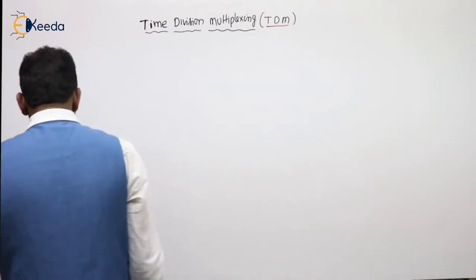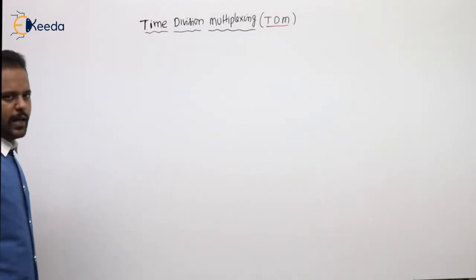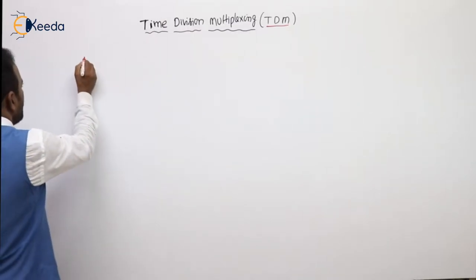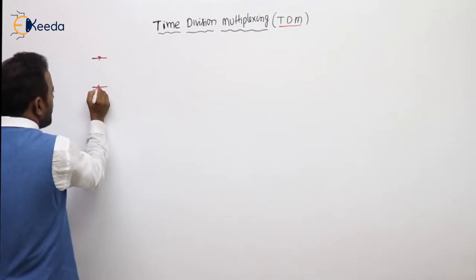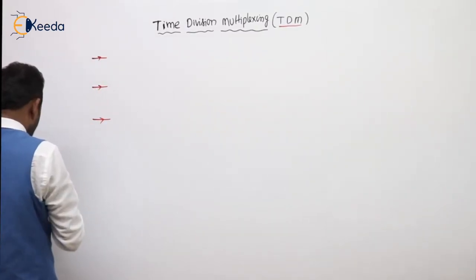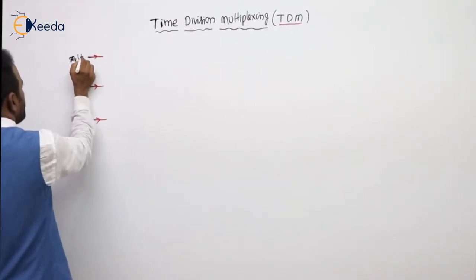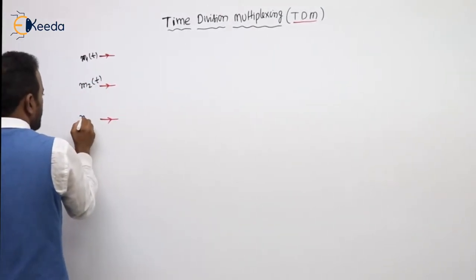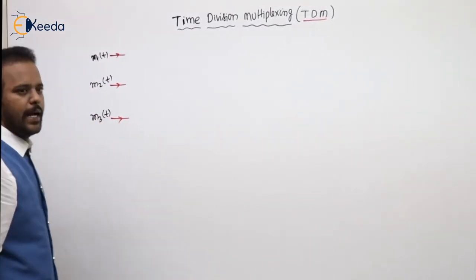Here I can multiplex some infinite number of signals, but I cannot show all of them on the board. For example, I am taking three messages to be multiplexed. Let us take the first message m1(t), like m2(t), like m3(t) — three messages.